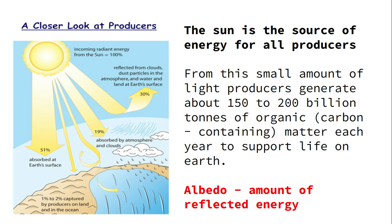When we don't absorb energy, there is a term called albedo. Think of an example of white clothing — white clothing reflects energy away. Albedo is the amount of reflected energy, meaning how much we are bouncing away and not actually absorbing.